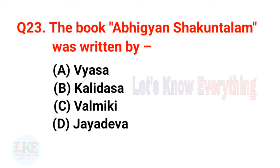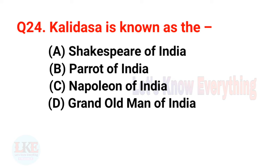Question 23: The book Abhigyan Shakuntalam was written by Kalidasa, who wrote this play in Sanskrit. Question 24: Kalidasa is known as the Shakespeare of India — a very important question, remember it.